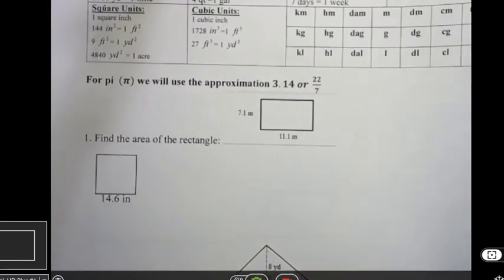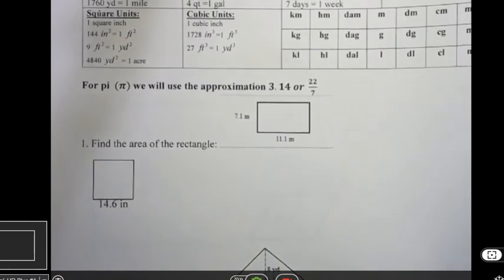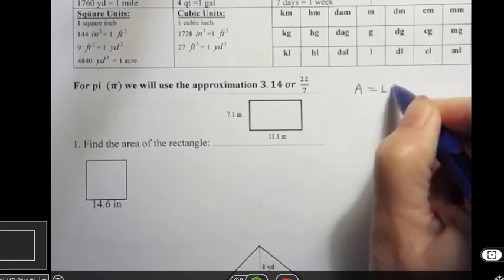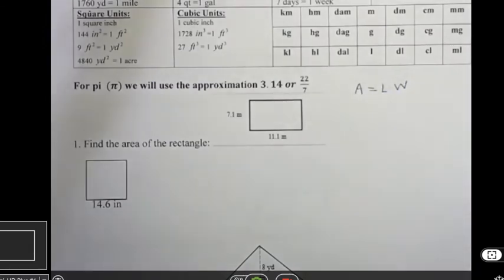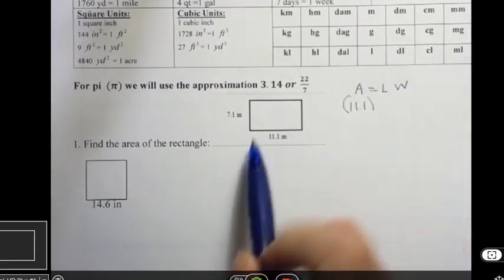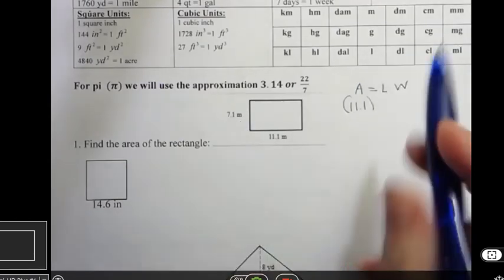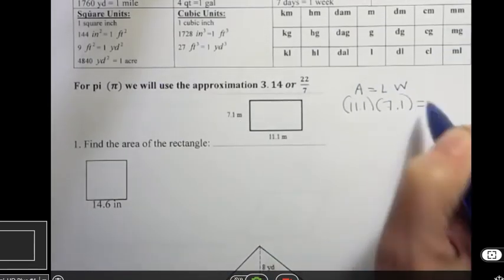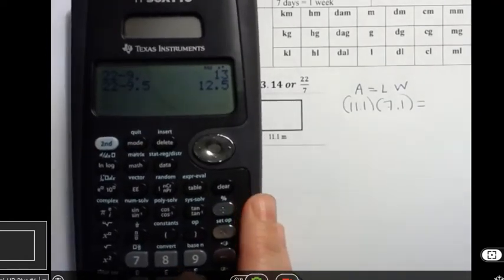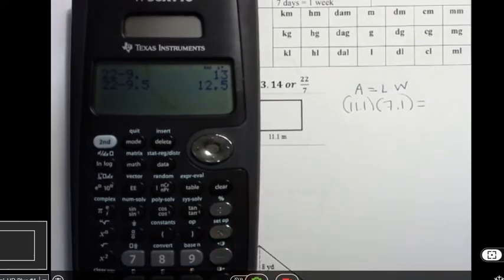So the first one I'm looking at asks you to find the area of a rectangle. And we just saw the rectangle formula, and that was area equals length times width. And so in this picture, we have a length of 11.1 and we have a width of 7.1. And so I'm just going to multiply those two things together. I'm going to use a calculator, and you're welcome to use a calculator as well. So 11.1 times 7.1 is 78.81.